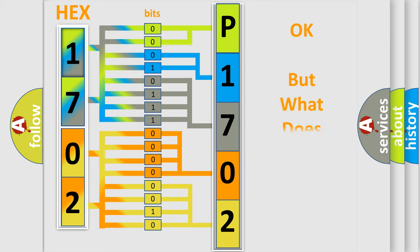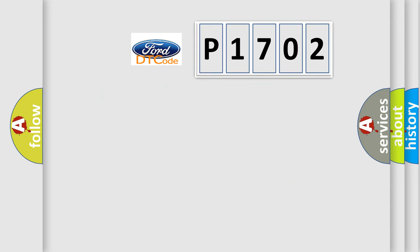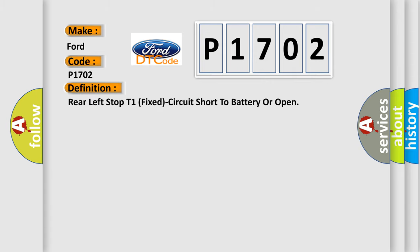We now know in what way the diagnostic tool translates the received information into a more comprehensible format. The number itself does not make sense to us if we cannot assign information about what it actually expresses. So, what does the diagnostic trouble code P1702 interpret specifically for Infinity car manufacturers?